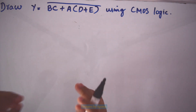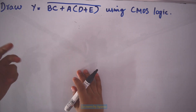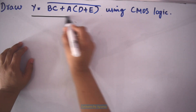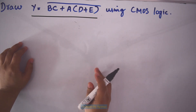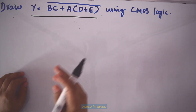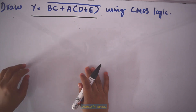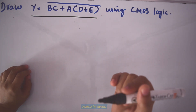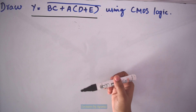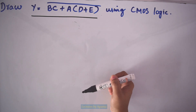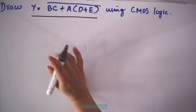Here we have to draw the CMOS circuit that implements the given logic function. I had done a video explaining the different steps in implementing a logic function using CMOS circuits. I will give the link to that video in the description box if you want to refer. Now let's draw the circuit for this question.